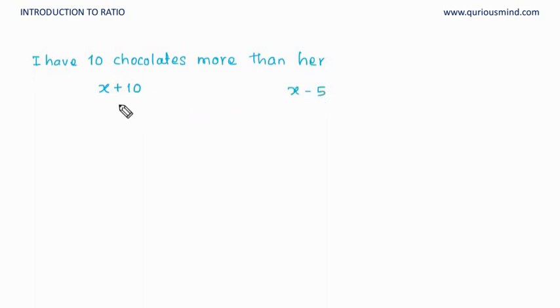So in this comparison, this relation which is plus 10 or minus 5 is an absolute value. Even if x increases multifold, the relation will always be plus or minus 5 or plus 10. This is an absolute value; the difference between them is going to be an absolute value.